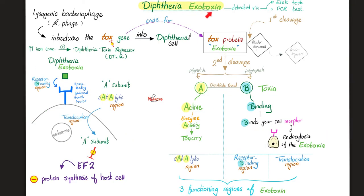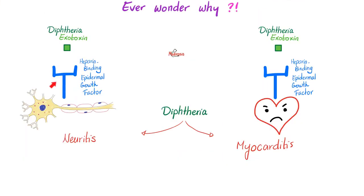The mechanism of the diphtheria toxin was discussed in the previous video — the tox gene, the tox protein, two subunits bound by a disulfide bond, the three regions, and inhibition of elongation factor 2, which inhibits your own protein synthesis. Without protein synthesis, you have no enzymes, no receptors, no pumps, no carriers, no channels. The receptor for the diphtheria toxin is present on your heart cells and nerve cells, which is why diphtheria leads to myocarditis and neuropathy.